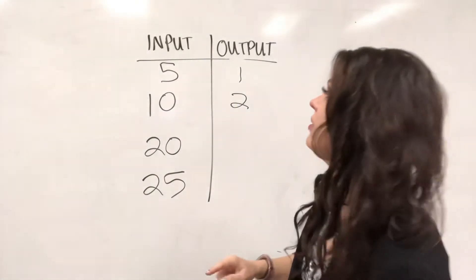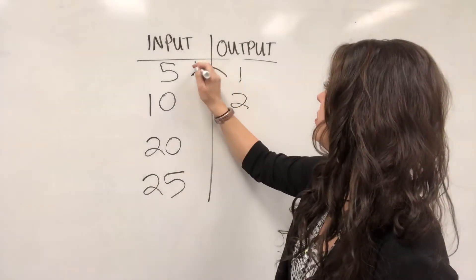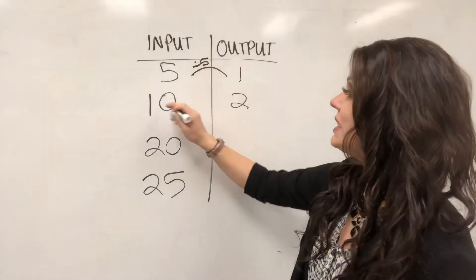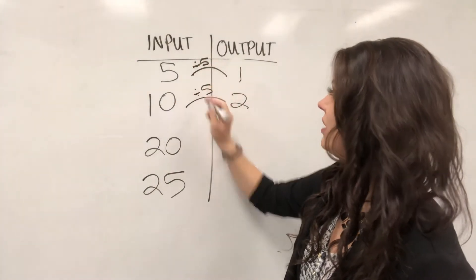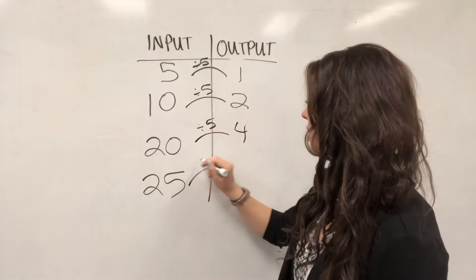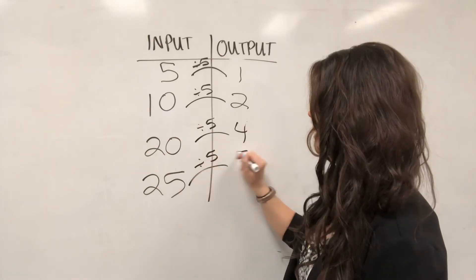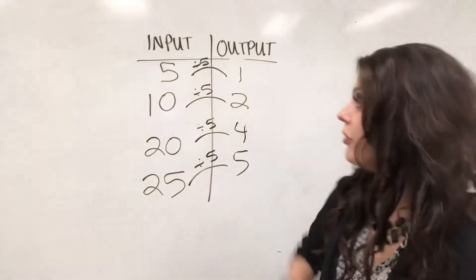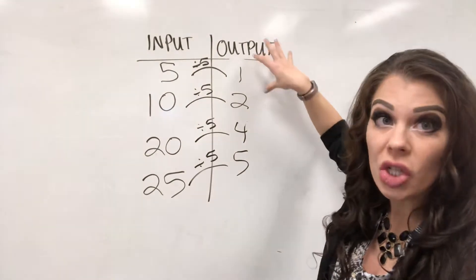So 5 divided by 5 equals 1, 10 divided by 5 equals 2, 20 divided by 5 equals 4, and 25 divided by 5 equals 5. So if your input is getting smaller into your output, you're going to divide or subtract.